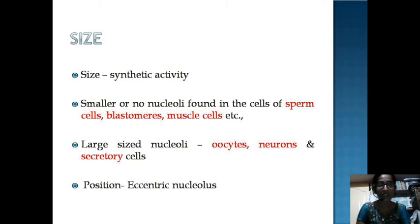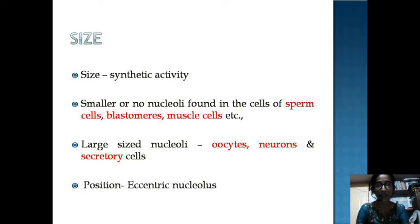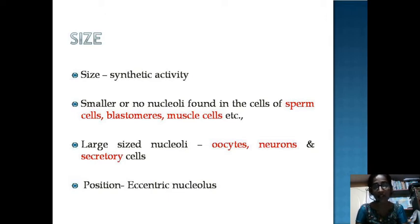Coming to the size of the Nucleolus, the size depends on the synthetic activity of the cell. If it is smaller in size, there is no synthetic activity — for example, in the case of sperm cells, blastomeres, and muscle cells. But large-size nucleoli are present in the case of oocytes, neurons, and secretory cells, because those cells are involved in the synthesis of certain substances. The position of the Nucleolus is eccentric.